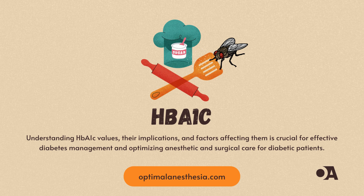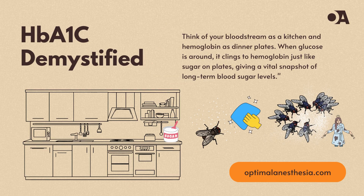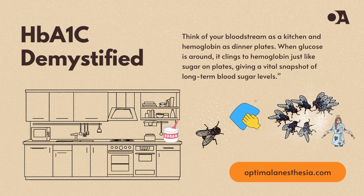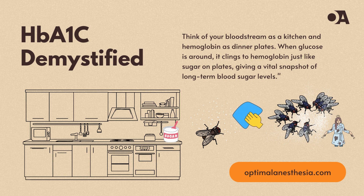And we're going to do it with an interesting twist — imagine blood sugar like sugar attracting flies. Imagine your bloodstream is a kitchen, and hemoglobin is like a set of dinner plates. When glucose, or sugar, is in your blood, it's like leaving out sugar in the kitchen. Just like how sugar attracts flies, glucose attaches to hemoglobin.